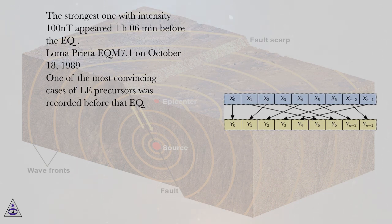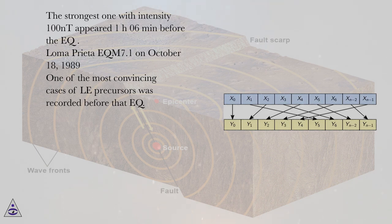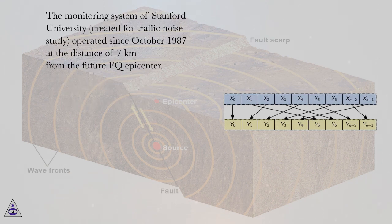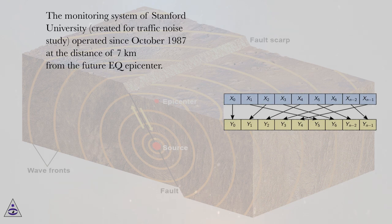Loma Prieta EQ M7.1 on October 18, 1989. One of the most convincing cases of precursors was recorded before that EQ. The monitoring system of Stanford University, created for traffic noise study, operated since October 1987 at the distance of 7 kilometers from the future EQ epicenter.